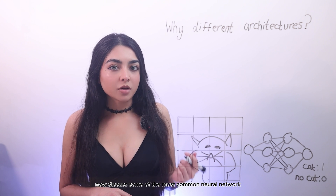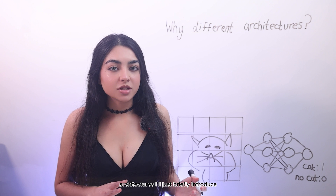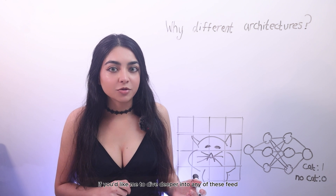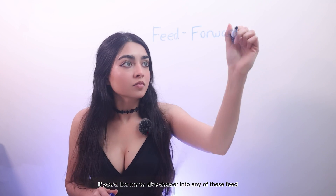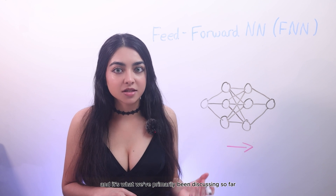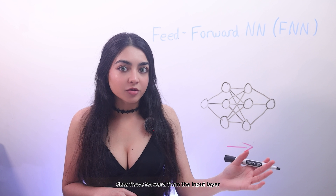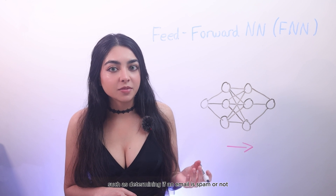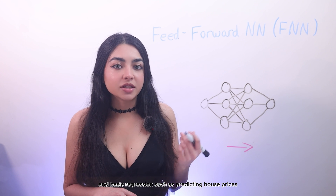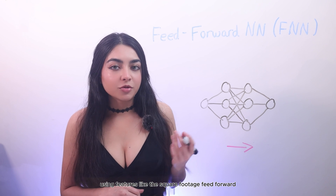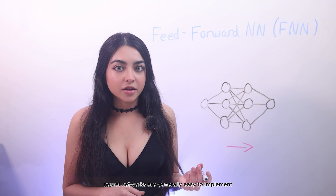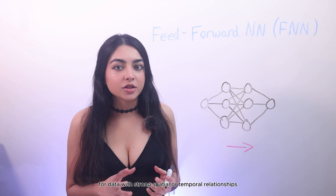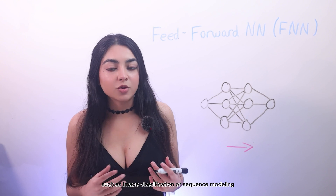Let's now discuss some of the most common neural network architectures. Feed-forward neural networks are the most straightforward type, and it's what we've primarily been discussing so far. Data flows forward from the input layer through the hidden layers to the output layer. Example use cases include simple classification, such as determining if an email is spam, and basic regression, such as predicting house prices using features like square footage. They are generally easy to implement, but not always suitable for data with strong spatial or temporal relationships, such as image classification or sequence modeling.